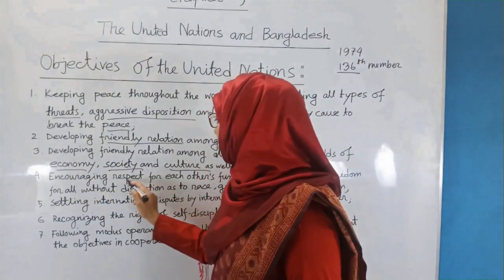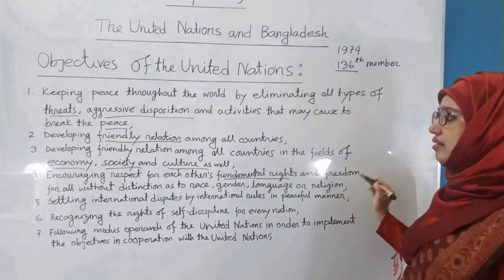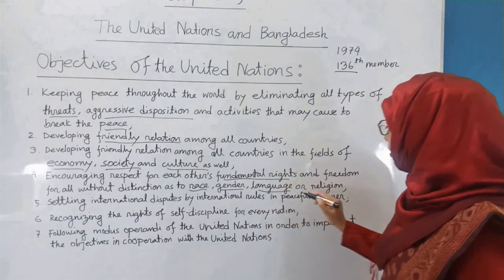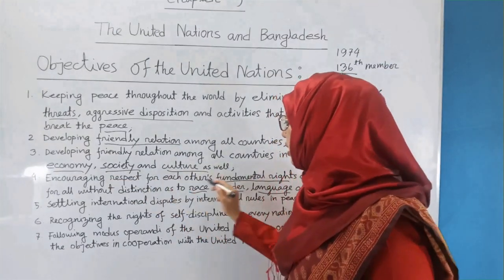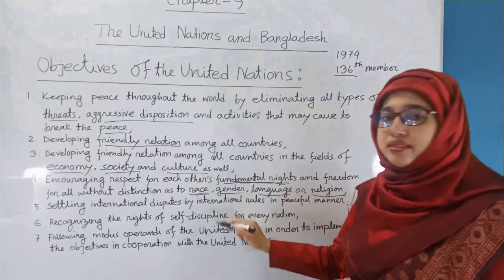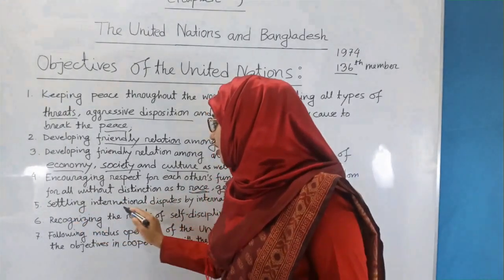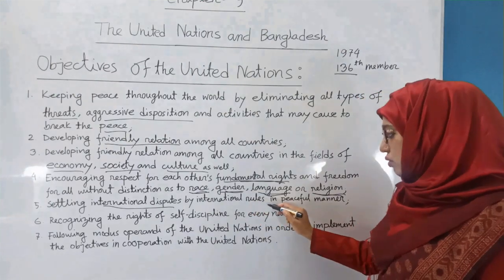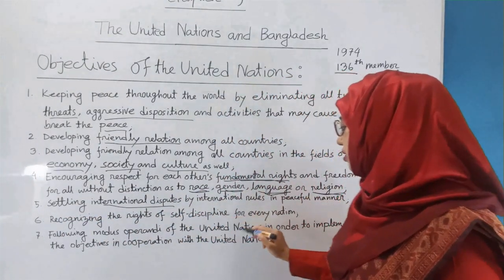Fourth: encouraging respect for each other's fundamental rights and freedom for all without distinction as to race, gender, language, or religion. Fifth: settling international disputes by international rules in a peaceful manner. Sixth: recognizing the rights of self-determination for every nation. Seventh: following the Modus Operandi of the United Nations in order to implement its objectives, meaning the rules and regulations for conducting the activities of the United Nations.